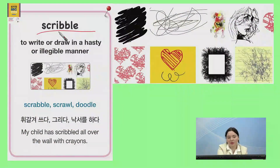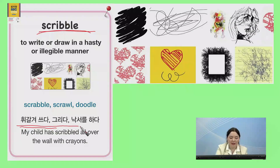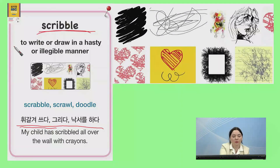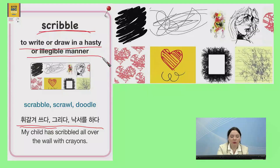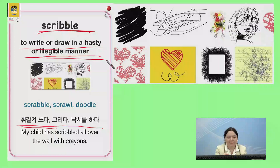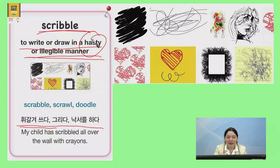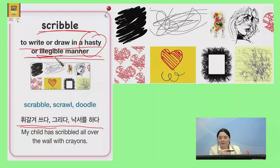The next word is scribble. Scribble. 한국말로는 휙휙 갈기어 쓰다, 긁다, 또는 낙서를 하다. 영어로 설명하면, to write or draw in a hasty or illegible manner. Hasty means 빠르게 — 그냥 정신없이 그냥 쓰는 거고. Illegible would be 그냥 읽을 수 없는 만큼 그냥 막 쓰는 거예요.